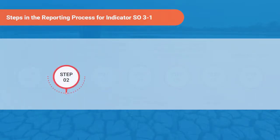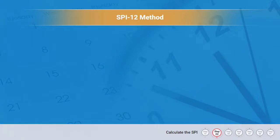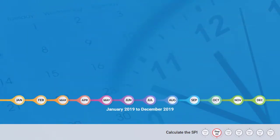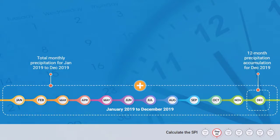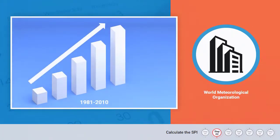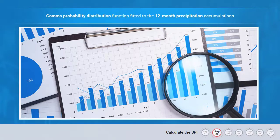The second step in the reporting process is calculating the SPI. Monthly time series of the SPI are calculated using the SPI-12 method, which provides an annual summary of precipitation deficits for each month using a 12-month accumulation method. For example, the 12-month precipitation accumulation for December 2019 is the total monthly precipitation for January 2019 to December 2019. The WMO climatological standard normal period of 1981 to 2010 is used as the reference period to normalise the 12-month precipitation accumulation data distribution. The normalisation method is based on a gamma probability distribution function fitted to the 12-month precipitation accumulations in this reference period.